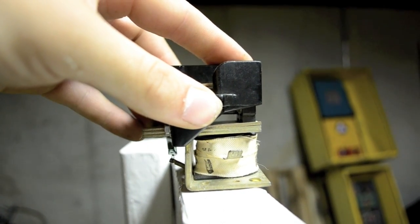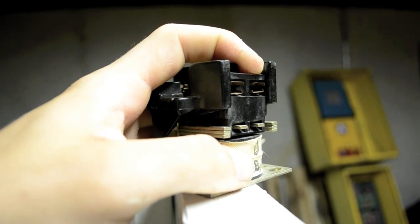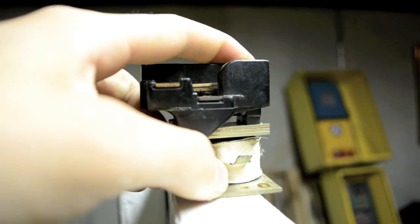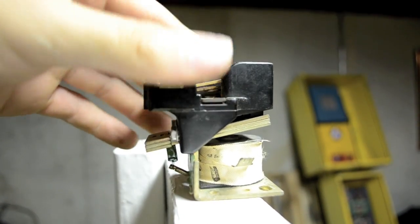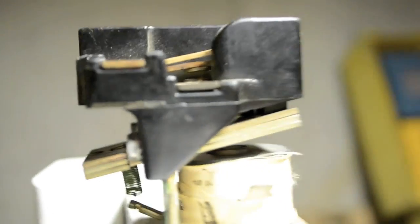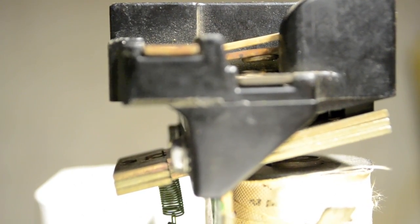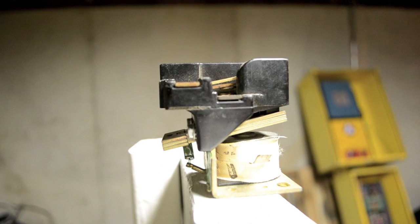And then the thermostat goes, okay, time to turn it off. And it will kill the connection in the coil, so the coil no longer has power going to it, and it would no longer be magnetic. And there's a spring pulling this up. It would pull up, and there is no longer power going from here to here. So basically, that's how a relay works.